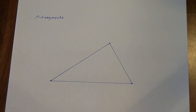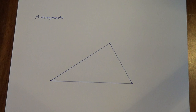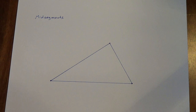Alright everybody, first thing we're going to do today is draw three mid-segments on our triangles. We've talked about mid-segments already. A mid-segment goes from the midpoint of one side of a triangle to the midpoint of a second side of a triangle. We're going to use our compass to figure that out.